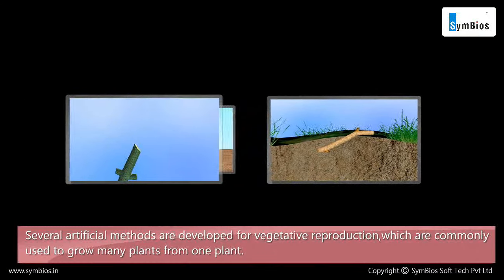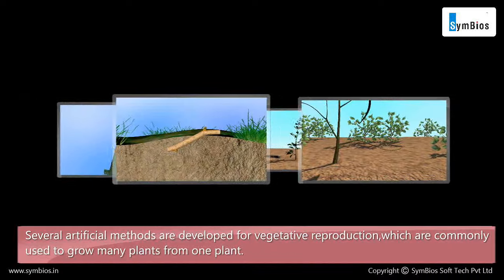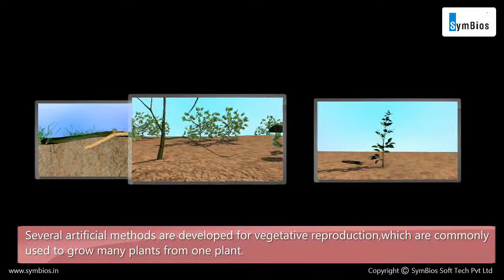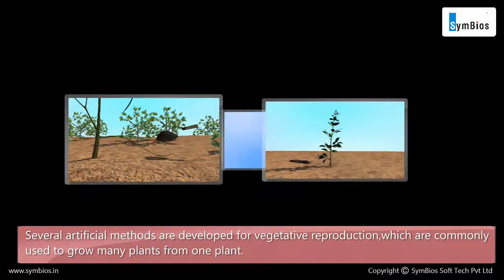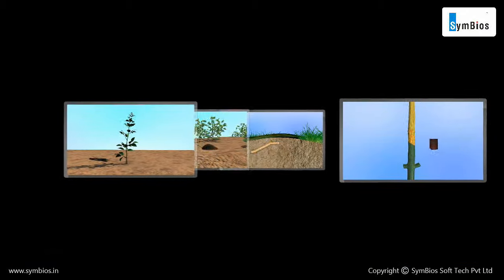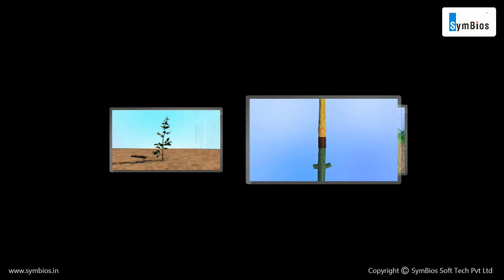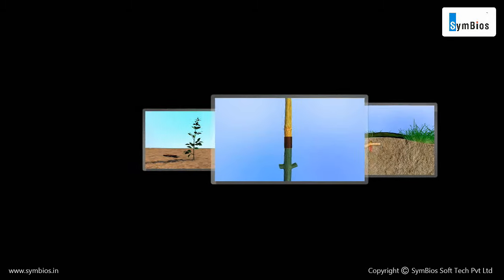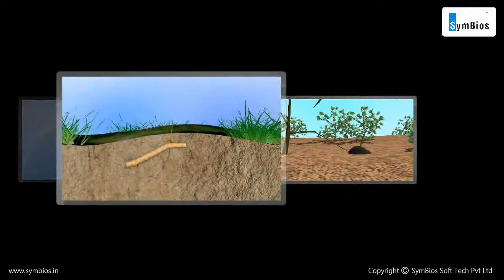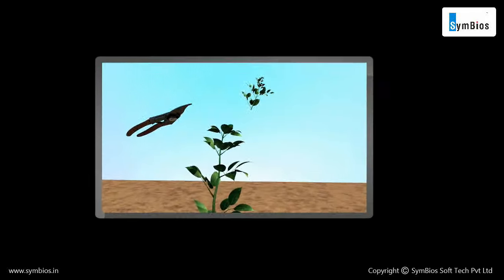Several artificial methods are developed for vegetative reproduction, which are commonly used to grow many plants from one plant. This is referred to as artificial propagation. Some of these methods include grafting, cutting, layering and tissue culture.